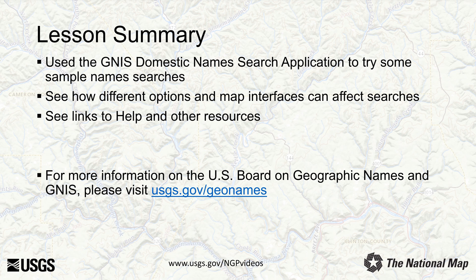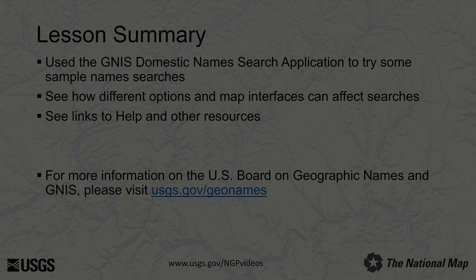Congratulations! You've finished Lesson 14A, Searching for Domestic Names in the Geographic Names Information System. In this lesson, we visited the GNIS Domestic Names Search application, tried some sample searches, saw how some of the search options and map interfaces can affect searches, and noted where help and other resources can be accessed. For more information on the U.S. Board on Geographic Names and GNIS, visit usgs.gov/geonames. If you are interested in learning more about the National Map Products and Services, please see the additional USGS training videos at usgs.gov/ngpvideos.